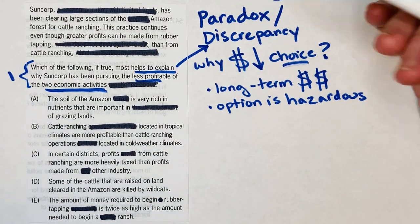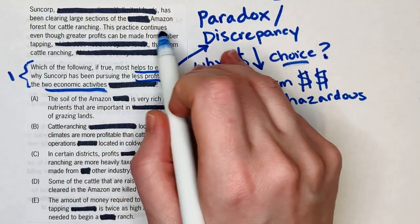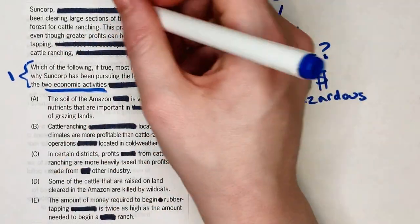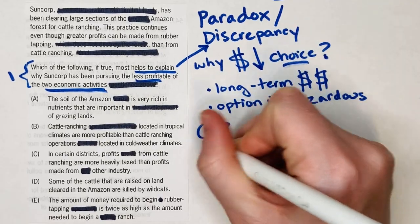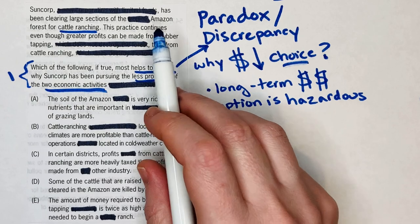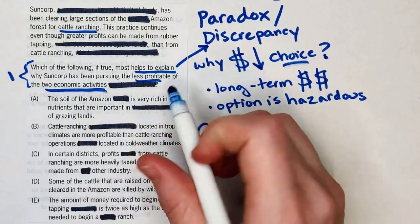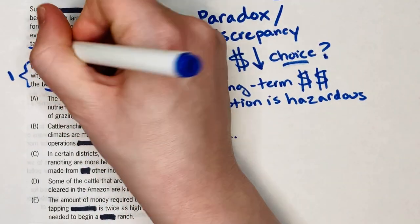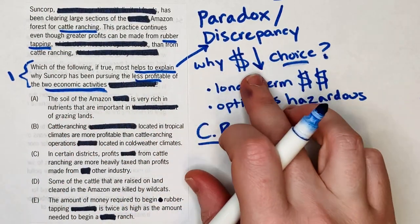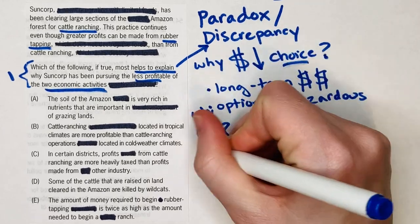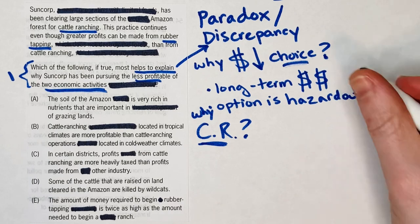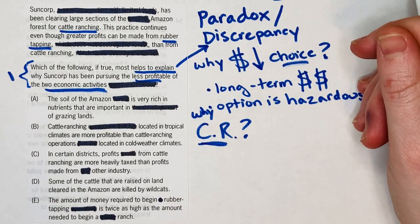Suncorp has been clearing large sections of the Amazon for cattle ranching. I'd note that as 'CR = cattle ranching.' This practice continues even though greater profits could be made from rubber tapping. So why are they choosing the one that makes the least money? Essentially, why are they choosing cattle ranching when they could be making more money from rubber tapping?